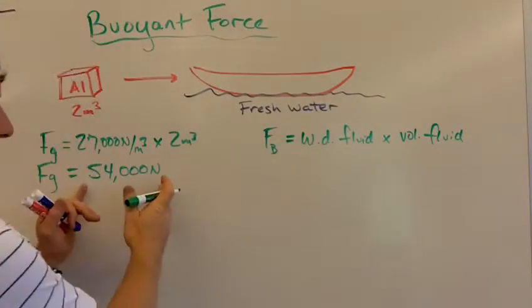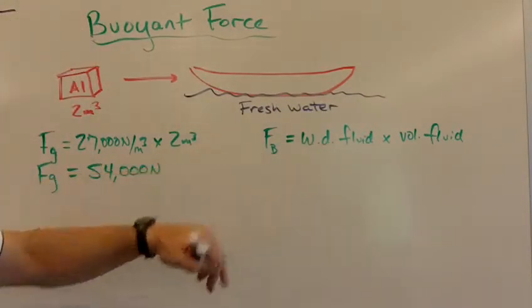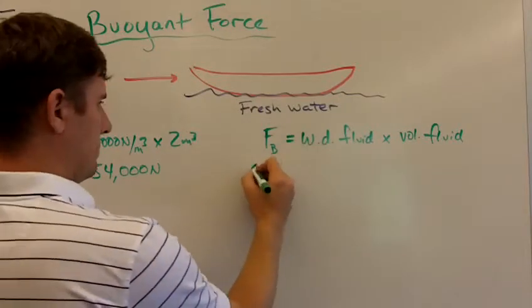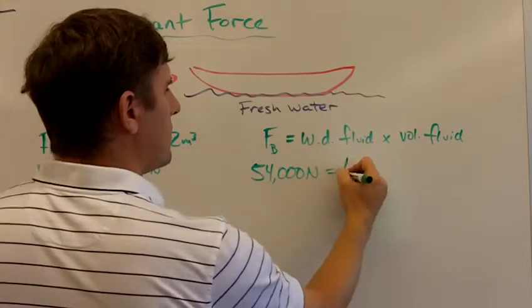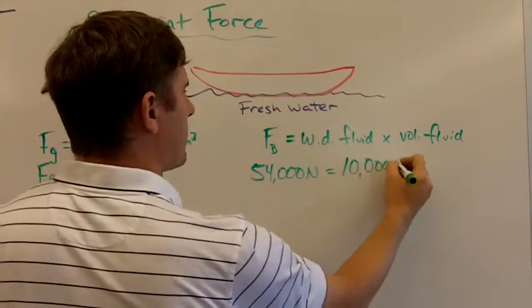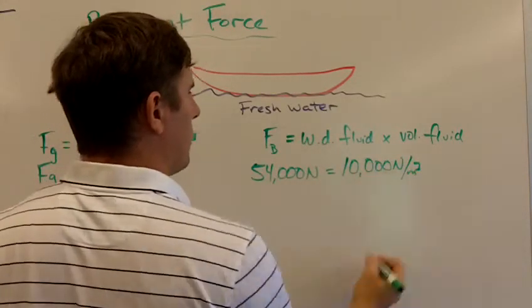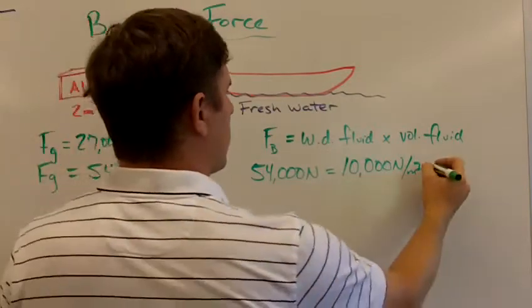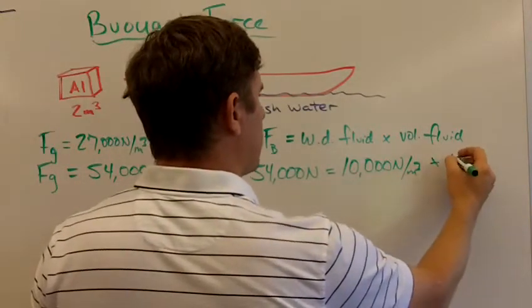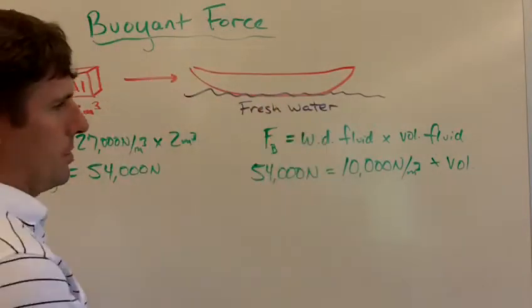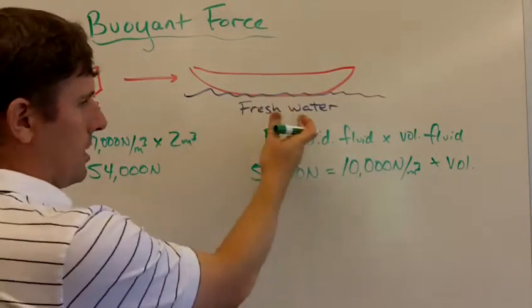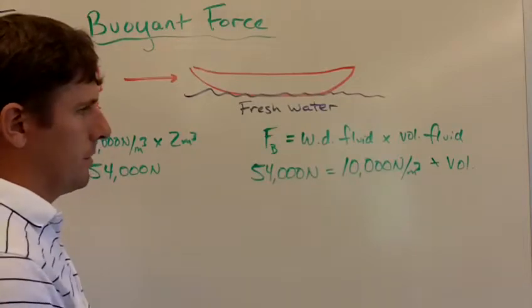And if the amount of buoyant force needs to be 54,000, and if we're in fresh water that means that it's 10,000 newtons is what one cubic meter weighs, then we're going to solve for the volume. Okay, how much water will be pushed aside? This is fresh water, which has a weight density of 10,000 newtons per cubic meter.